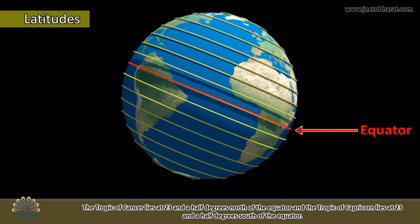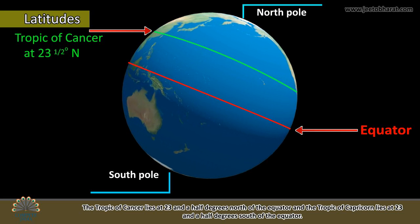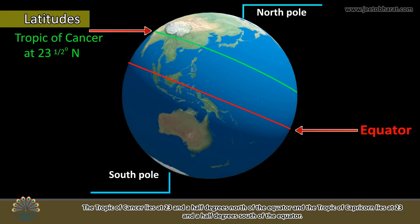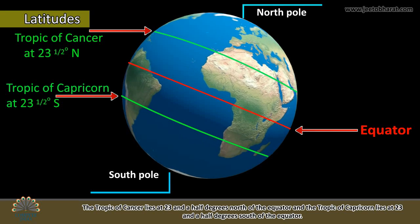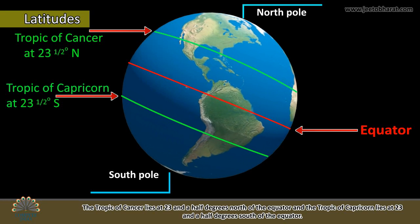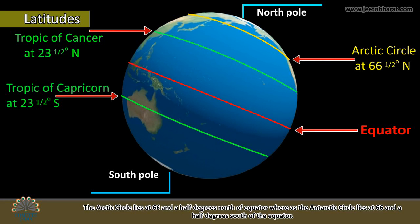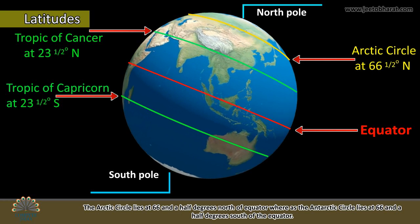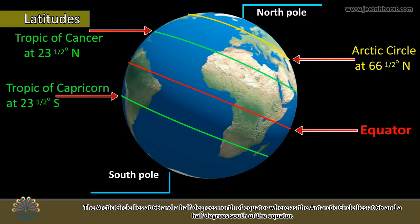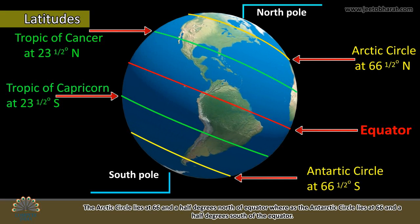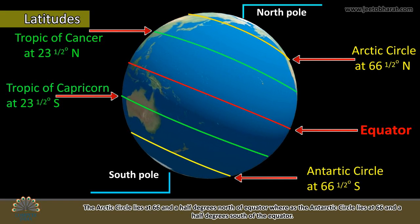The Tropic of Cancer lies at 23.5 degrees north of the equator, and the Tropic of Capricorn lies at 23.5 degrees south of the equator. The Arctic Circle lies at 66.5 degrees north of the equator, whereas the Antarctic Circle lies at 66.5 degrees south of the equator.